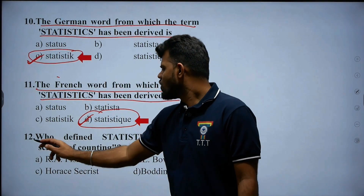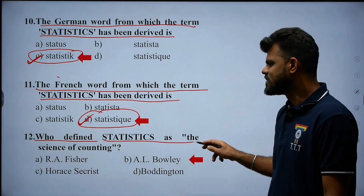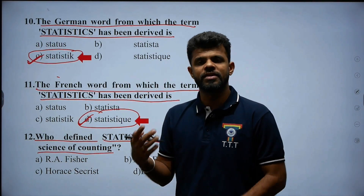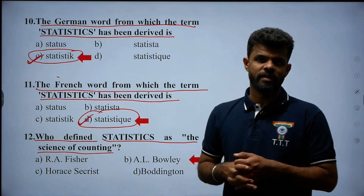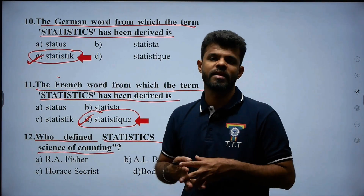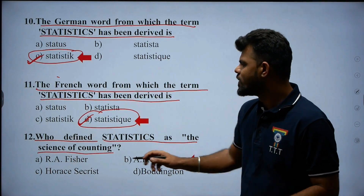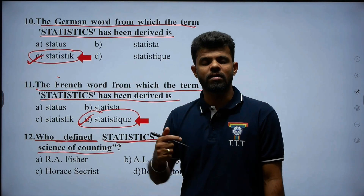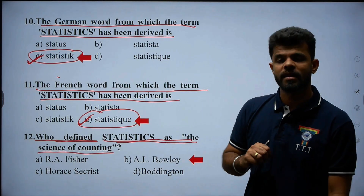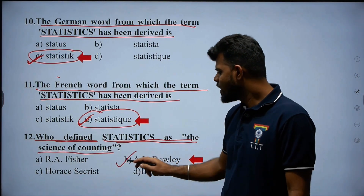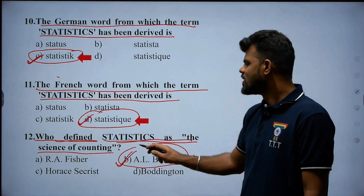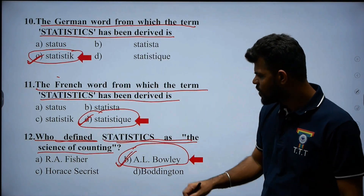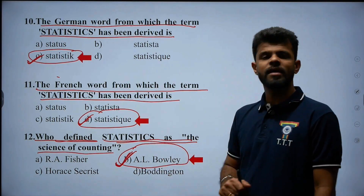Question number twelve: who defined statistics as the science of counting or science of averages? That is A.L. Bowley. A.L. Bowley defined statistics as the science of counting or science of averages. Therefore, option B — A.L. Bowley — is the right answer.